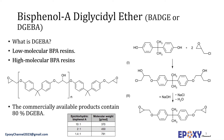Moreover, diglycidyl ether bisphenol A reacts with acrylic acid to give vinyl ester resins, which are discussed later in a separate video on epoxy acrylates. The reaction results in the opening of the epoxide ring, generating unsaturated esters at each terminus of the molecule. Such materials are often diluted with styrene and converted to resin.